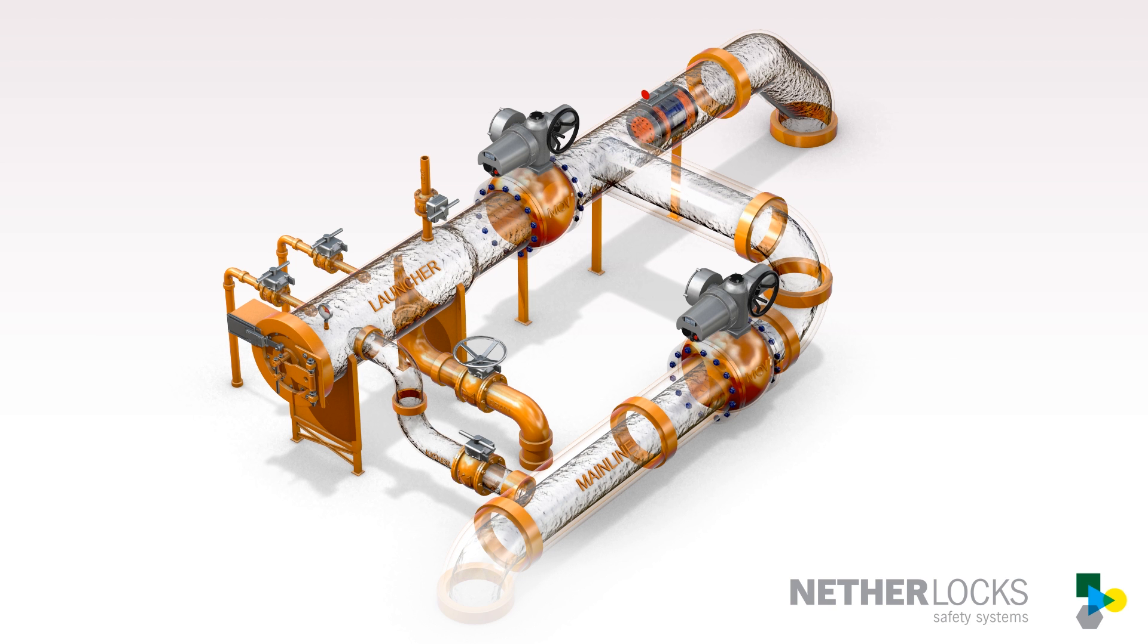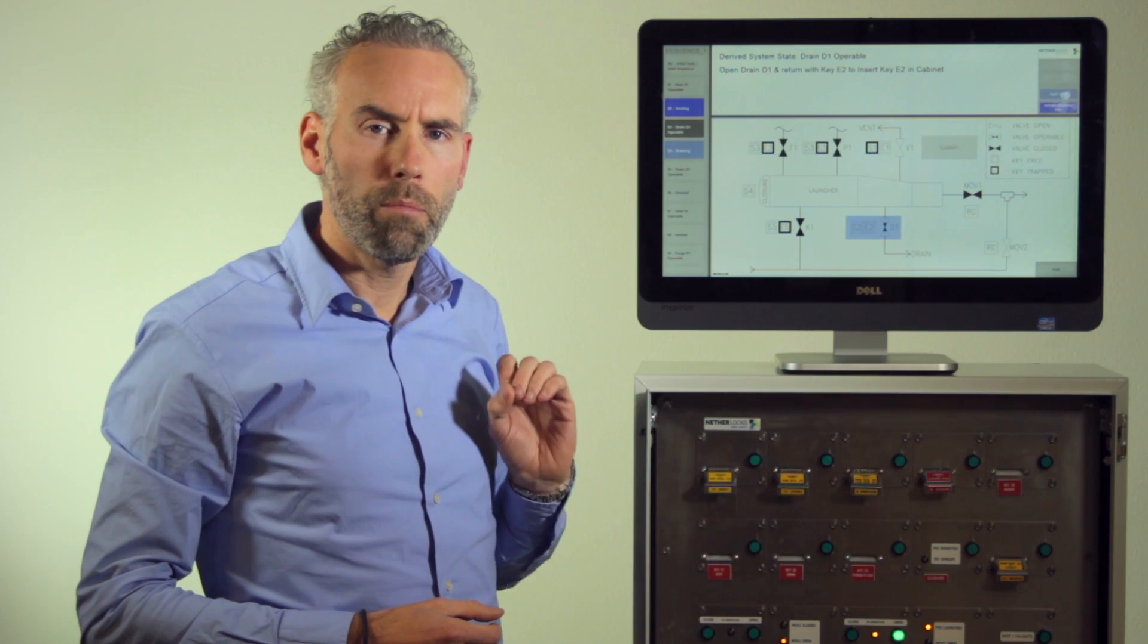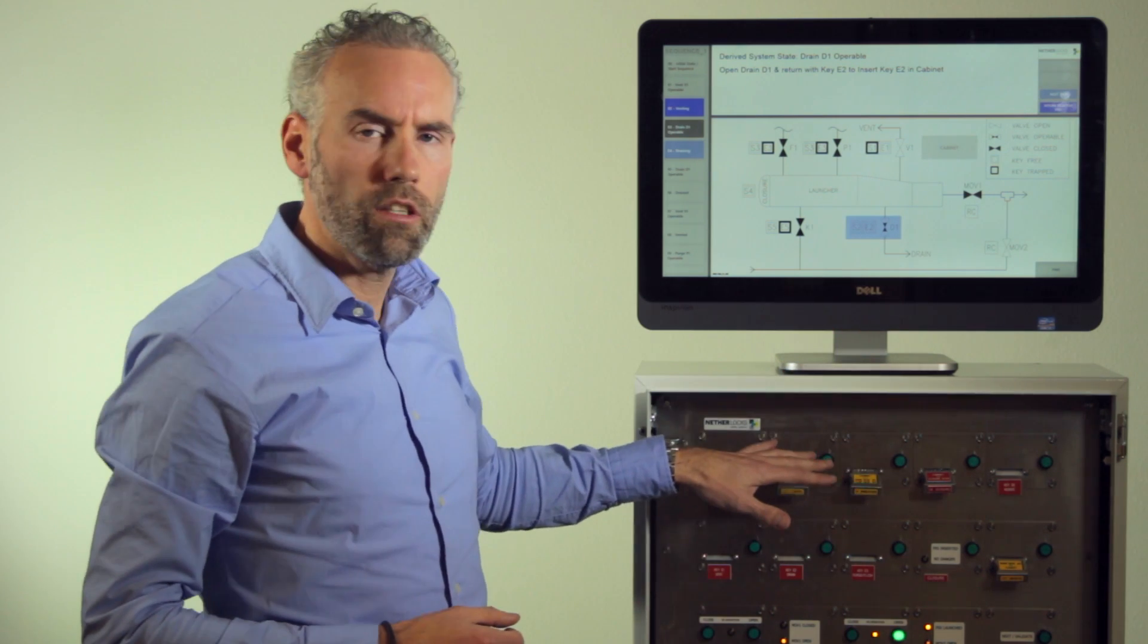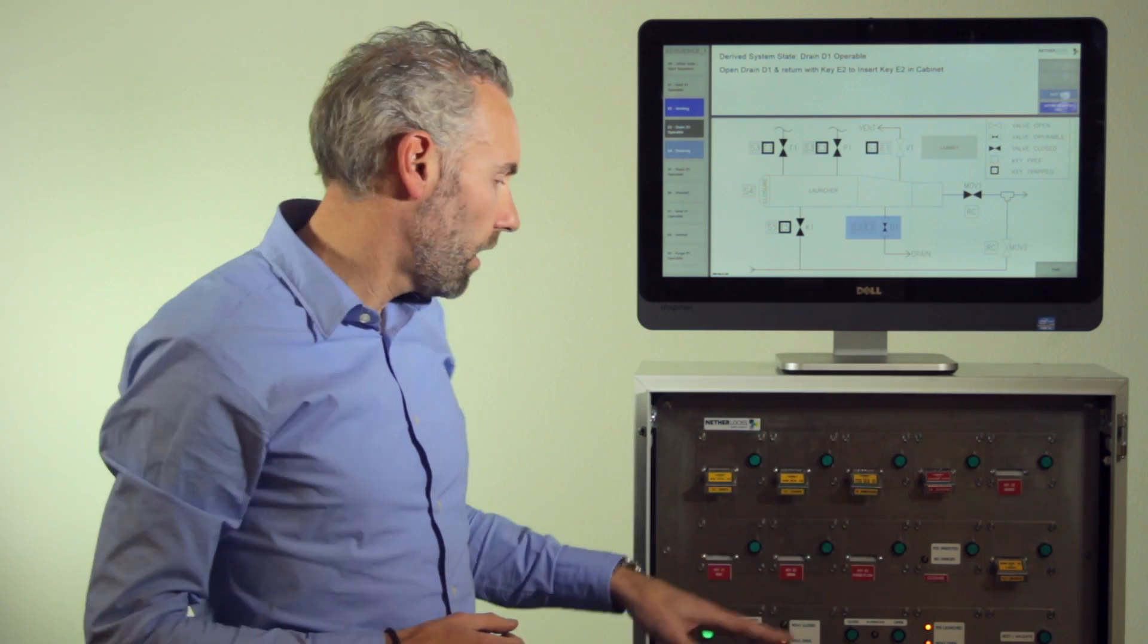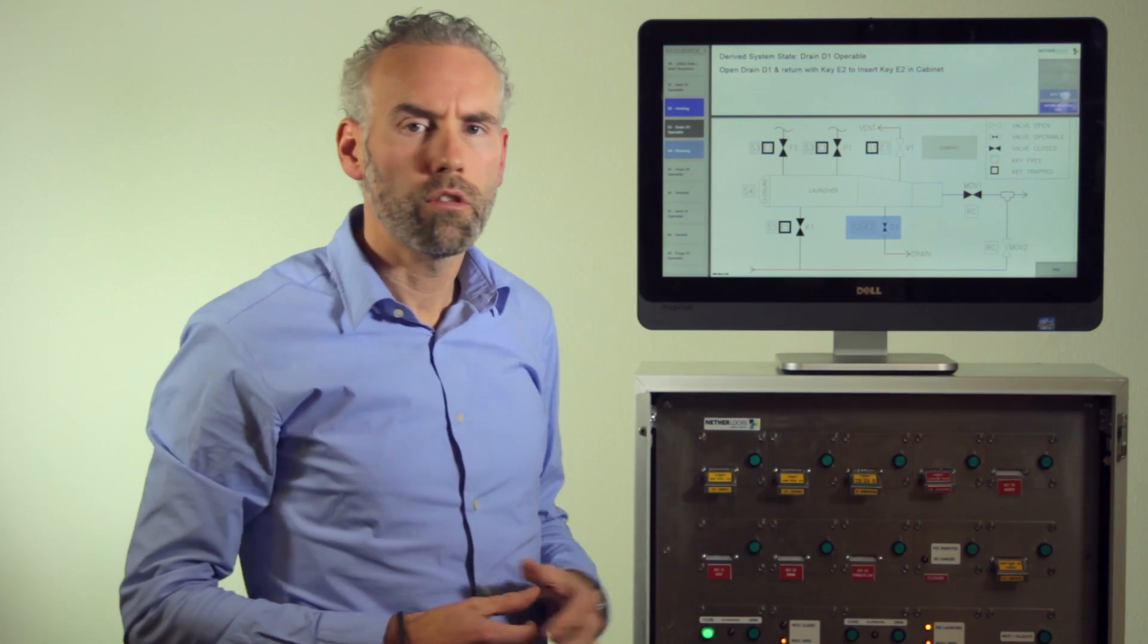In this case also the pig signaler is connected to the system so when the pig passes the pig signal, a signal is provided to the cabinet that the pig is physically out and allows you to close the throttle valve again inside the sequence.